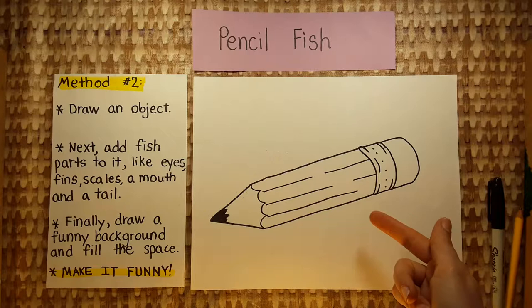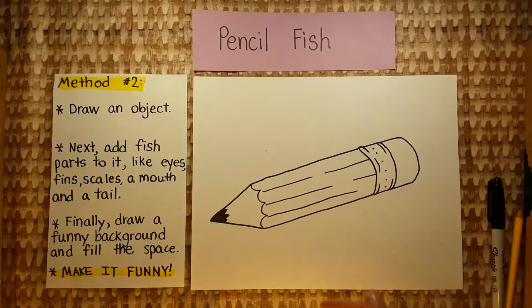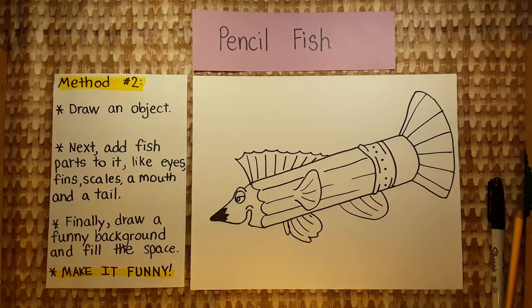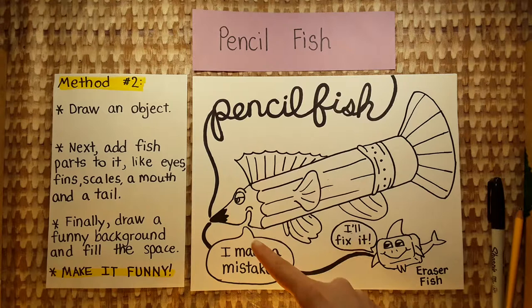Here is another method you can use to draw a fish pun. First, draw an object. In this example, the fish pun is a pencil fish, so I started with a pencil. Next, add fish parts to it, like eyes, fins, scales, a mouth, and a tail. Finally, draw a funny background and fill up the space.